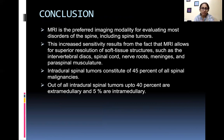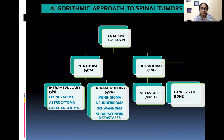Conclusion: MRI is the preferred imaging modality for evaluating most disorders of the spine, including spinal tumors, due to superior resolution of soft tissue structures such as intervertebral discs, spinal cord, nerve roots, meninges, and paraspinal musculature. Intradural spinal tumors constitute only 45 percent of all spinal malignancies; of these, up to 40 percent are extramedullary and 5 percent are intramedullary. Algorithmically, of the 45 percent intradural tumors, 5 percent are intramedullary (ependymoma, astrocytoma, paraganglioma) and 40 percent are extramedullary (meningioma, neurofibroma, schwannoma, subarachnoid metastasis), while extradural tumors include bone cancers and metastasis.